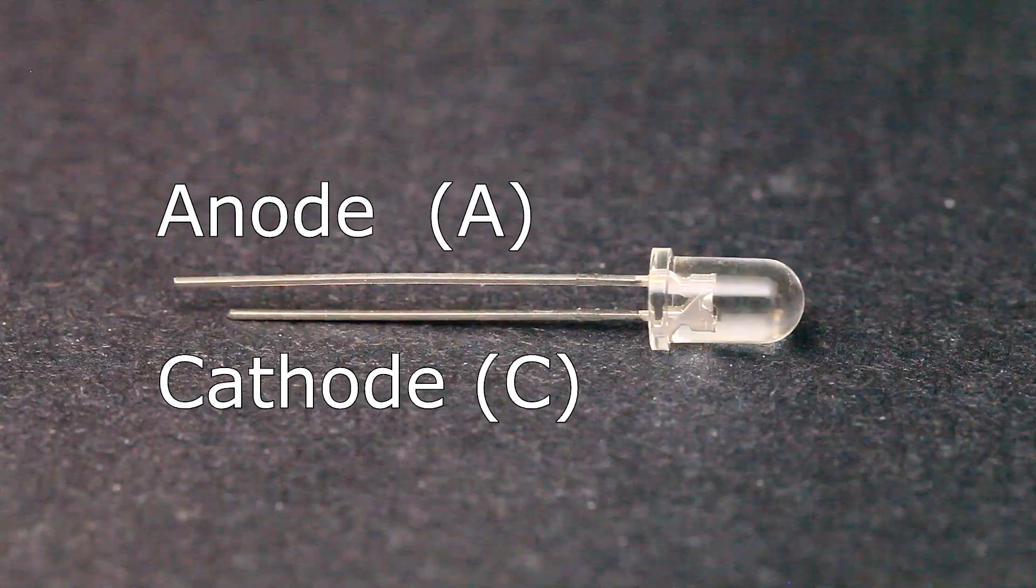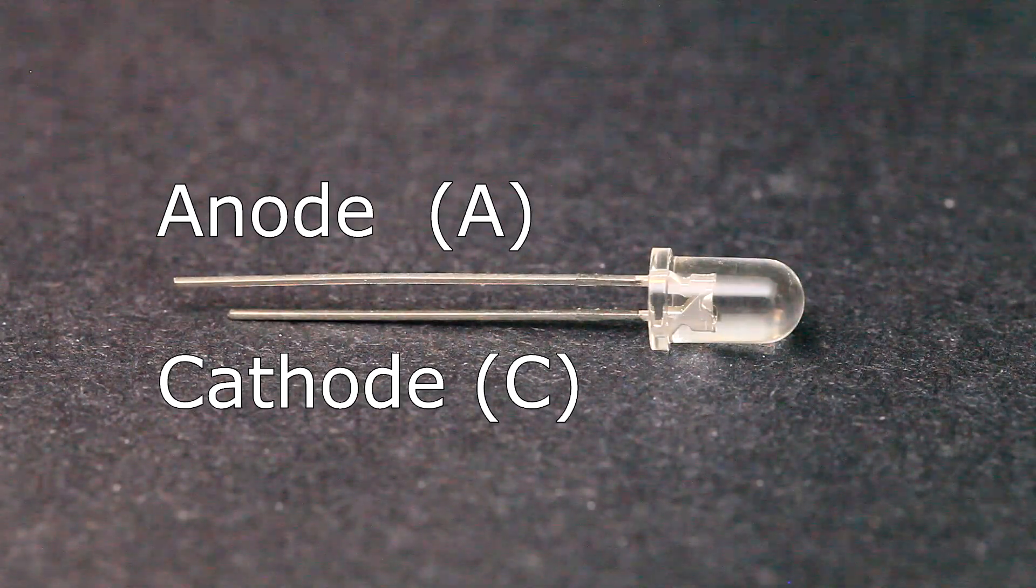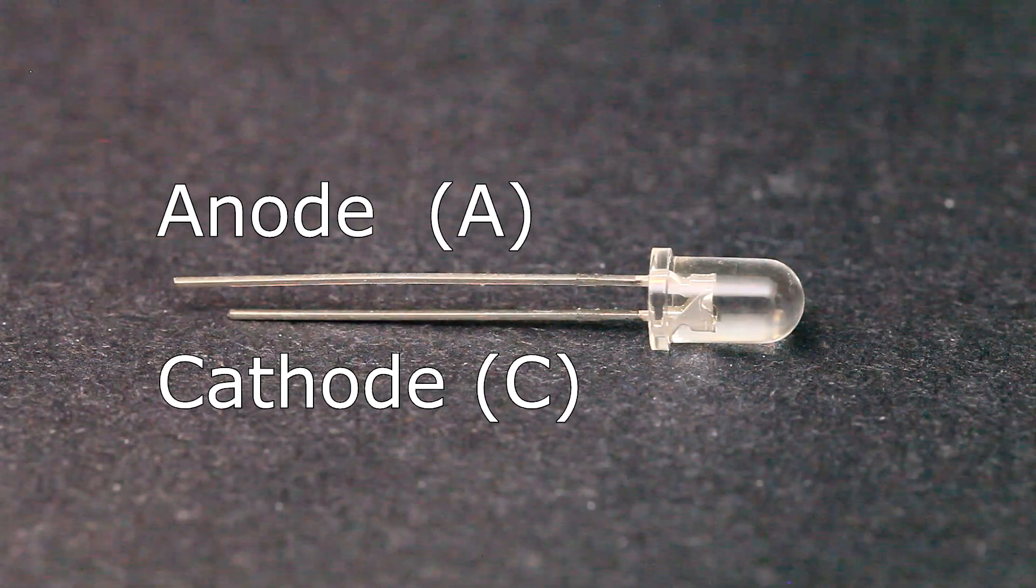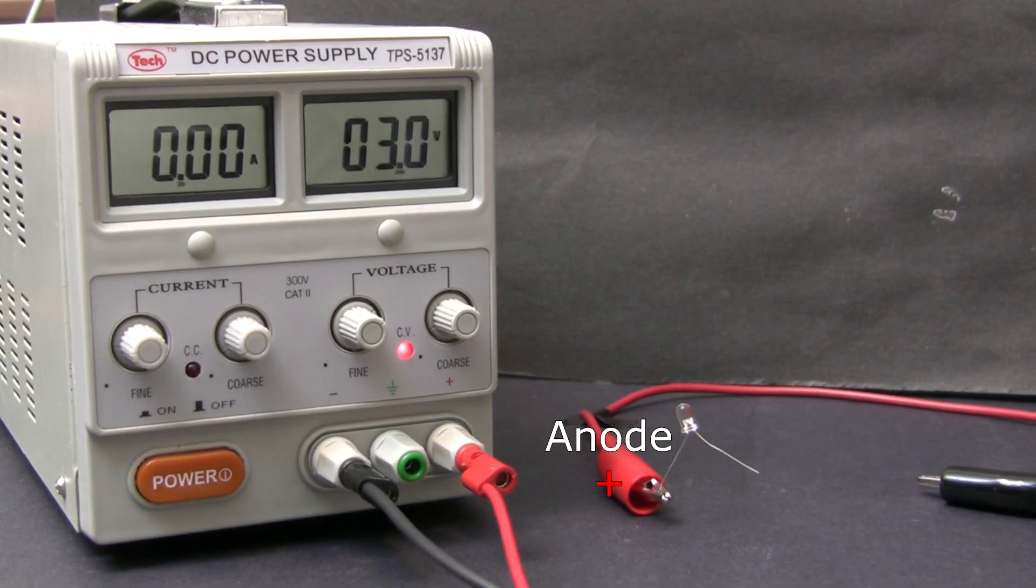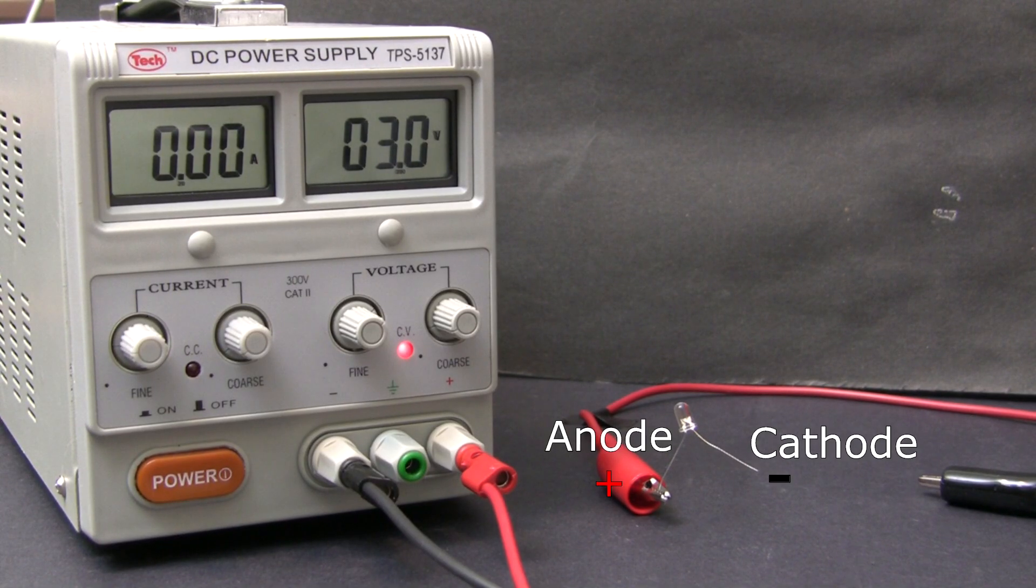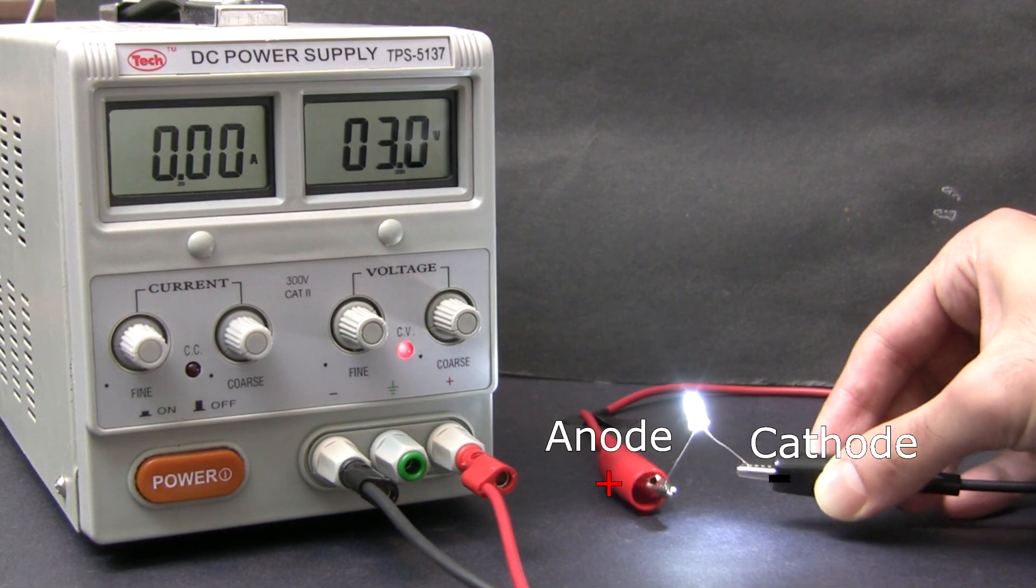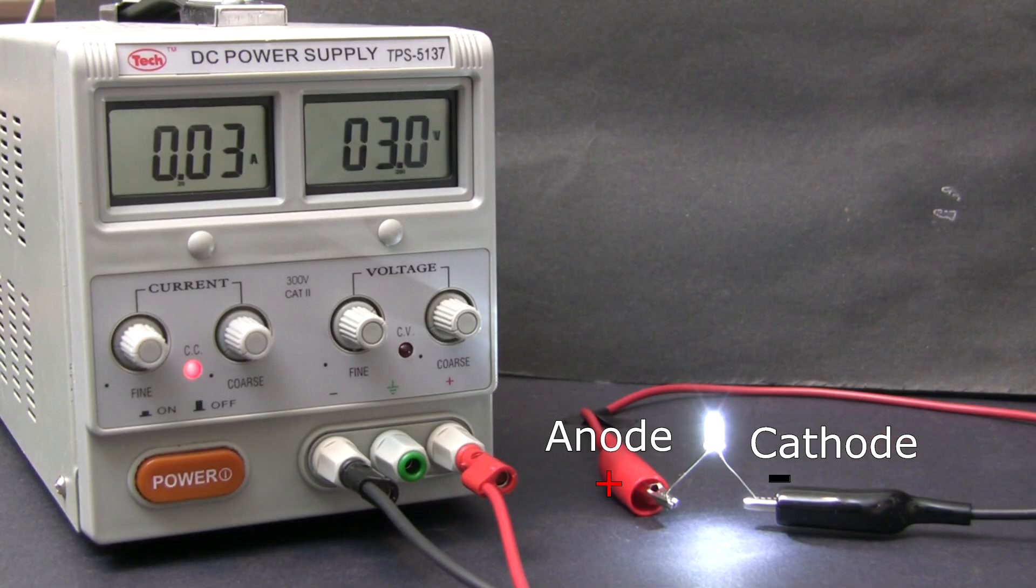All LEDs will have two leads, an anode and a cathode. The anode and cathode are sometimes abbreviated A and C. The anode is the side that conventional current will flow into. In other words, you connect the positive side of your power source to the anode. The cathode is where conventional current will flow out from. So you'll connect your negative side of your power source to the cathode.